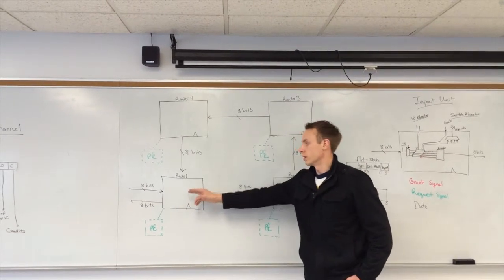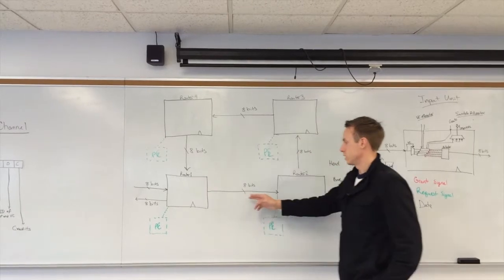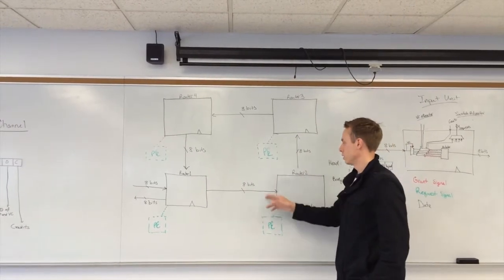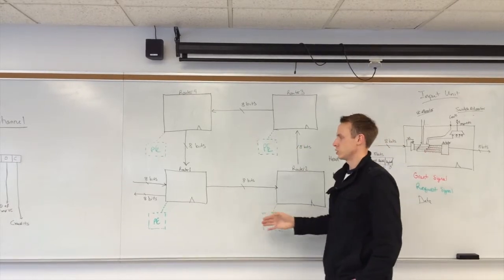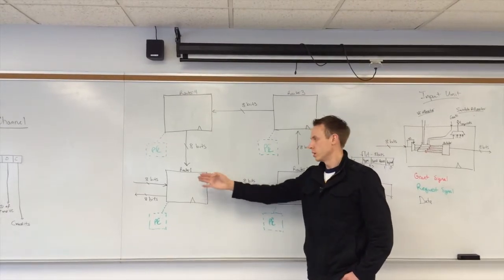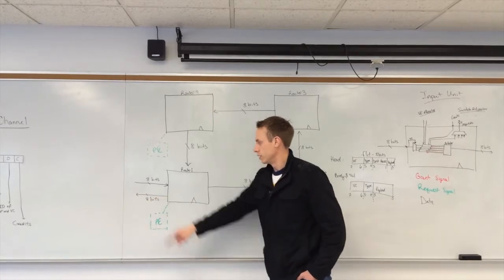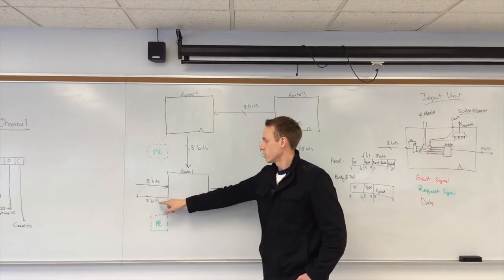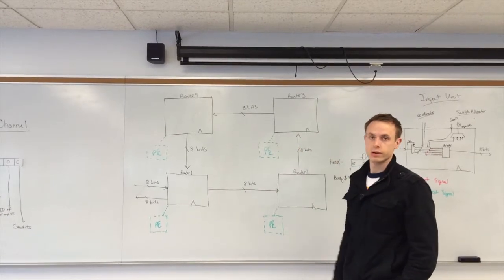So we have an increment of one on the payload here. This will also change our destination address to appropriately reroute to the next router, and increment by one here, here, here. So we'd actually be incrementing our payload by four, and then we'd see the data exit on the output unit of router one as it's finally traversed the entire network.